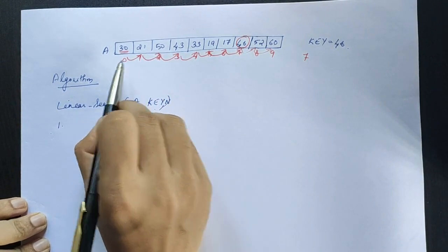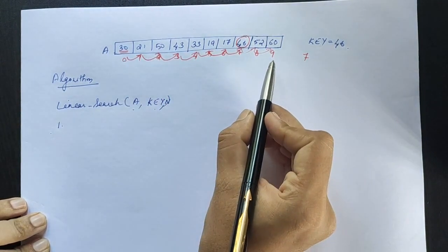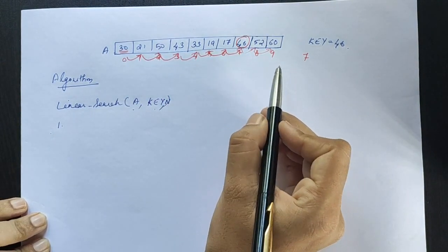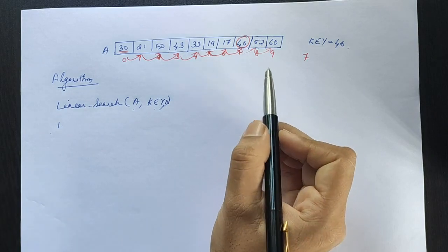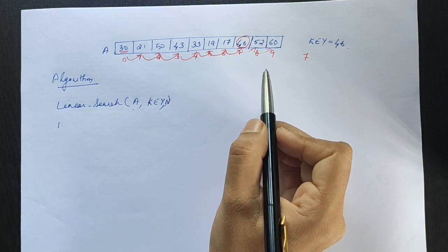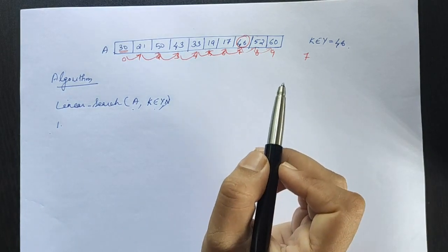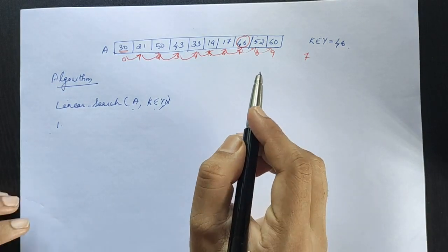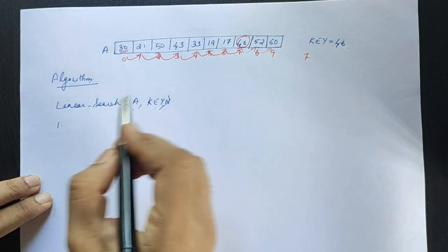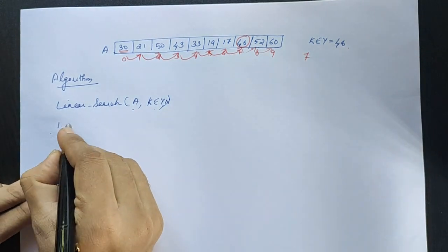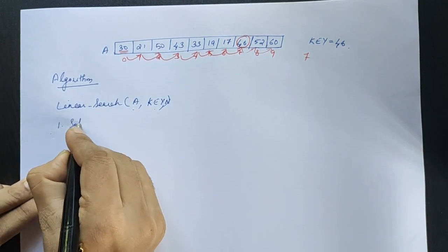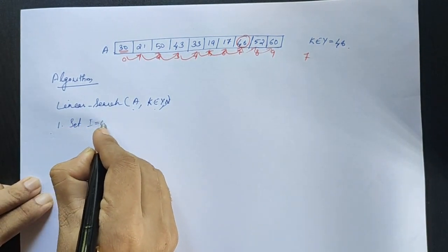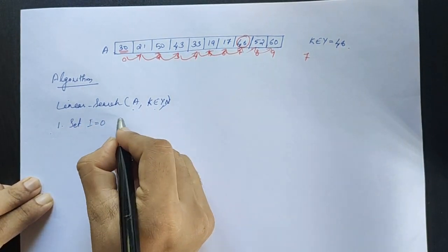The index starts at the zero element and goes up to n minus one, which is the last element. We initialize i equal to zero.